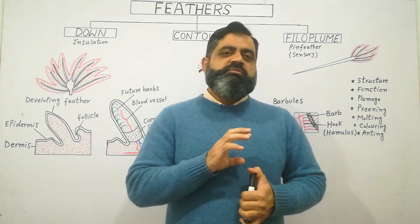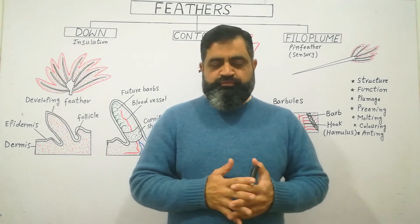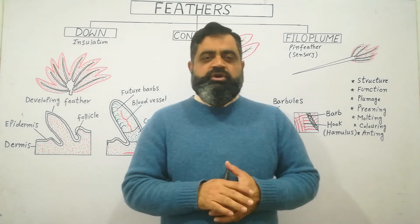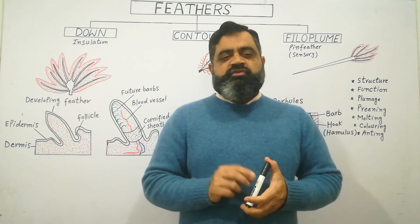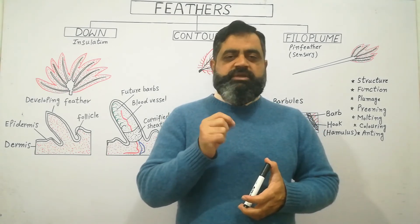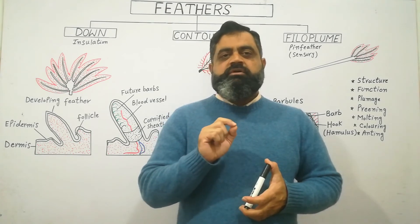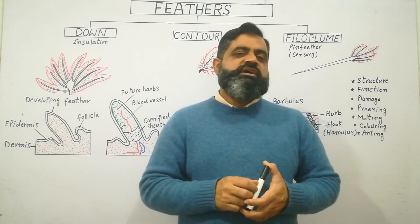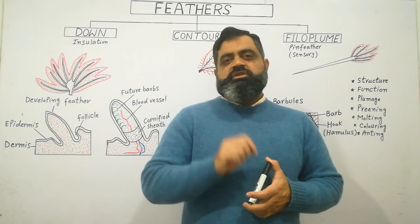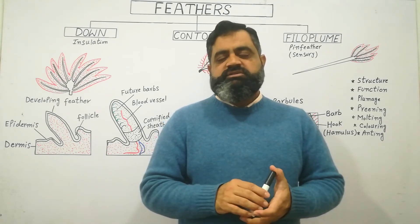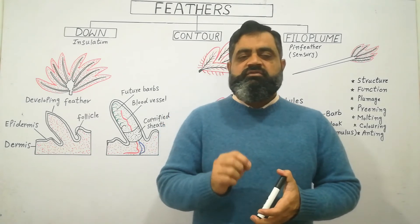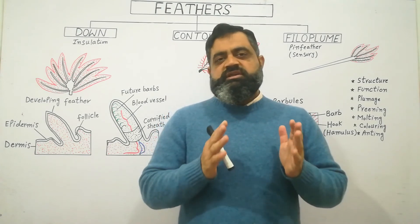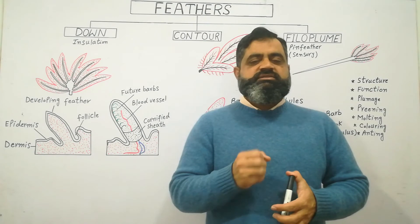The next term is anting, a very important phenomenon. Birds find ants and with the help of their beaks pick up ants and rub them on the surface of their feathers. The formic acid present in the sting or body of the ants is rubbed on the feather surface so that parasites like ticks and mites present in the feathers can be killed by the formic acid. In this way, birds keep their feathers neat, healthy, and clean from parasites and dirt.